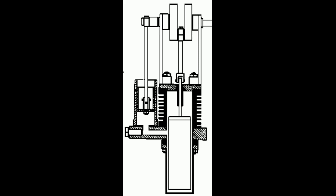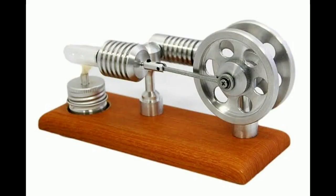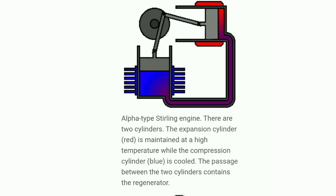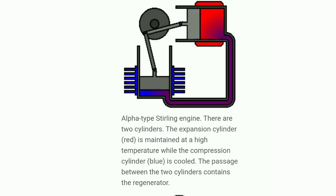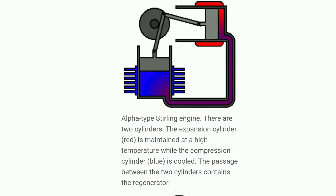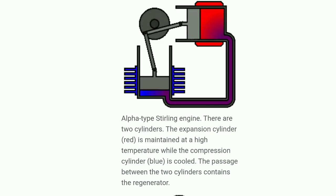First we have the alpha type. Alpha type has two separate cylinders, one for heating purpose and one for cooling purpose. When we apply heat to the heating cylinder, the gas expands to the cooling cylinder. When we apply cooling, the flywheel continues the motion back to the heating cylinder.